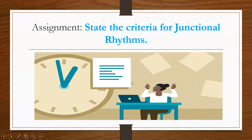Here's your second assignment with AV junctional rhythms: state the criteria for junctional rhythms. You don't have to state the criteria for each individual junctional rhythm yet, but just state the general criteria for a junctional rhythm.